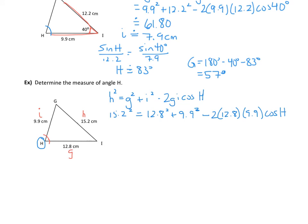This is more complicated because we have to solve for cosine of H. The terms with cosine are attached through multiplication, while the others are attached by addition and subtraction. So we use BEDMAS backwards to isolate cosine of H.